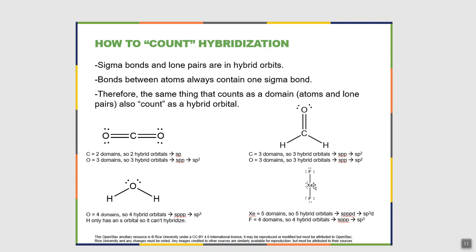Xenon in XeF2 has two fluorines and three lone pairs, for a total of five domains. Five domains means five hybrid orbitals: s, p, p, p — but you've now run out of p's, so the next one is a d. The hybridization here is sp3d. Fluorine has xenon and three lone pairs — four domains, four hybrid orbitals — sp3. So this is how we count hybridization in atoms: look for the number of domains. All things that account for domains also count for hybrid orbitals — namely lone pairs and sigma bonds. Once you count domains, you can tell the hybridization of any atom.